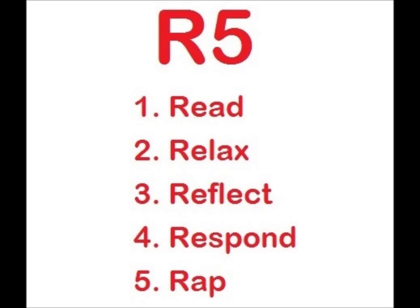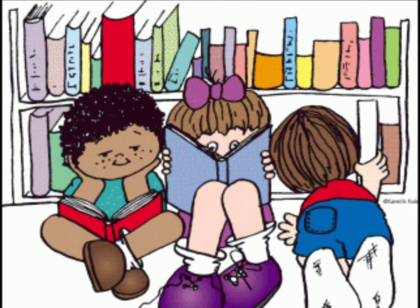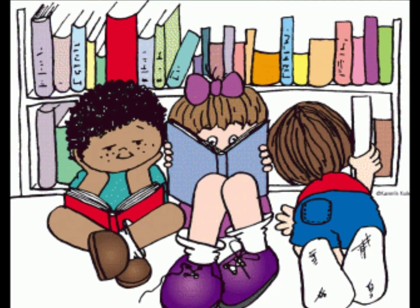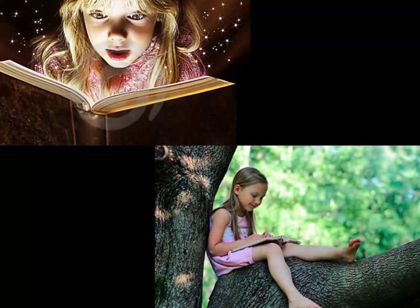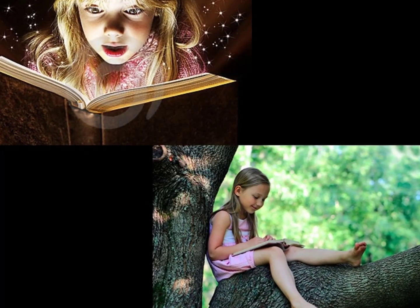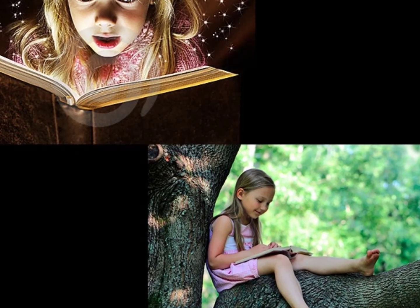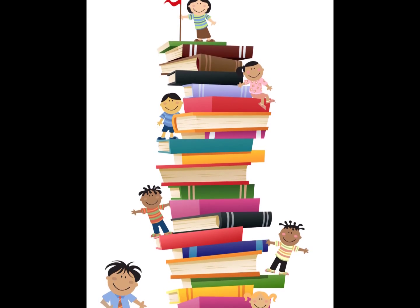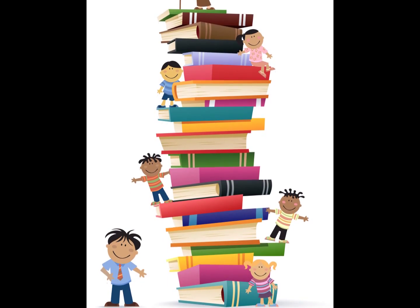R5 stands for Read, Relax, Reflect, Respond, and Wrap. For Read and Relax, students read self-selected texts and are allowed to sit in an area of the classroom where they are comfortable. I know that I personally as a student had much more interest in reading a book if I was allowed to choose it than if it was assigned to me. The classroom should have a variety of texts that meet both student needs and curricular goals.